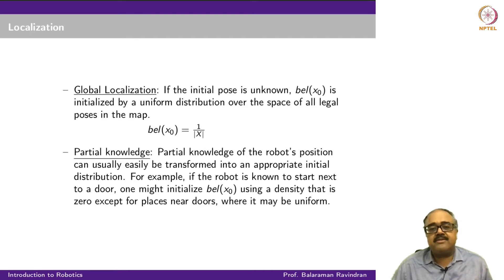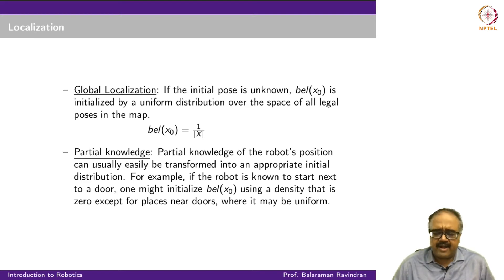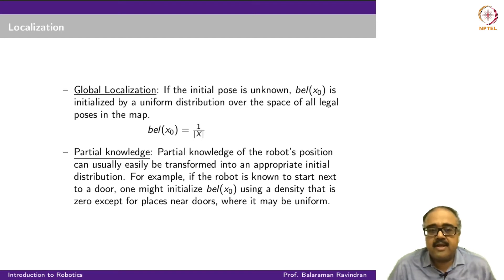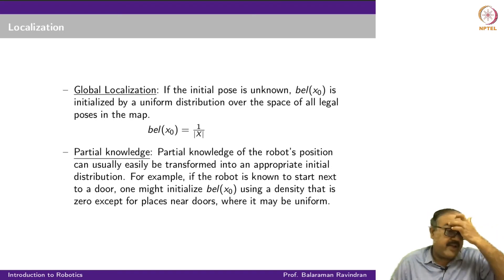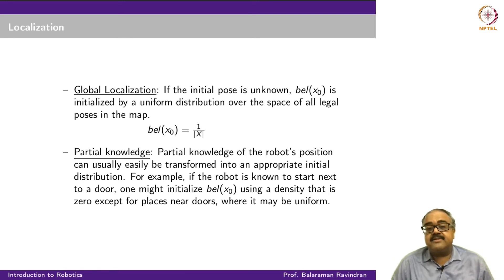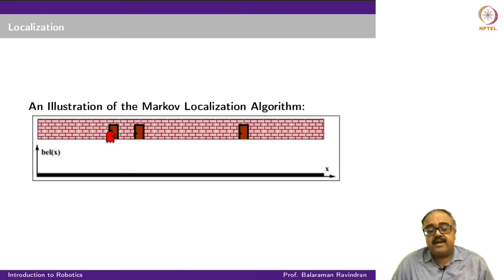For the kidnapped robot problem, bell(x0) can be something arbitrary. For example, in a world with three doors, if my first sensor reading says I am next to a door, the density has some value near a door and is zero elsewhere — a way of accommodating partial knowledge. To handle the kidnapped robot problem, I have to make sure my belief distribution is such that updates never make the belief anywhere go to zero.